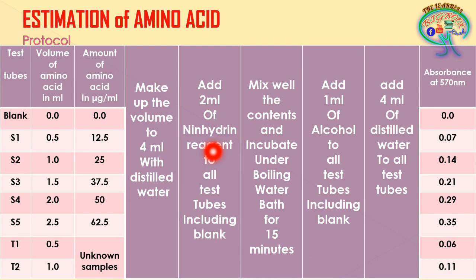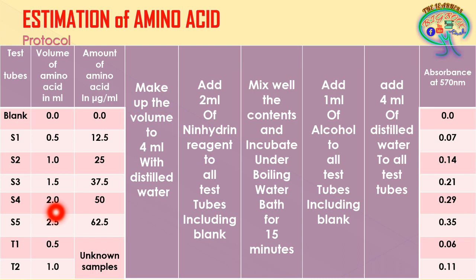Add 2 ml of ninhydrin reagent to all test tubes including the blank. The blank now contains only 4 ml distilled water and 2 ml ninhydrin reagent. Mix the contents well and keep under a boiling water bath for 15 minutes incubation. Then add 1 ml of alcohol (the diluent) to all test tubes including the blank.